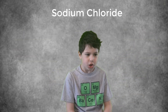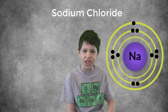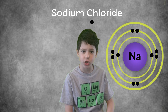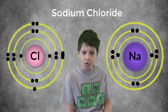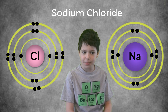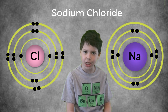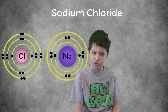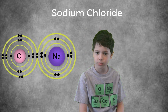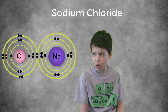Let's take sodium chloride. Sodium transfers its one valence electron to chlorine to form a chloride ion and a sodium ion. They are oppositely charged ions and will be electrostatically attracted to one another by an ionic bond.